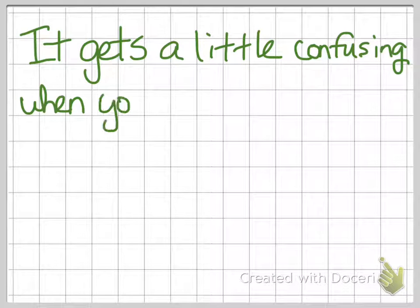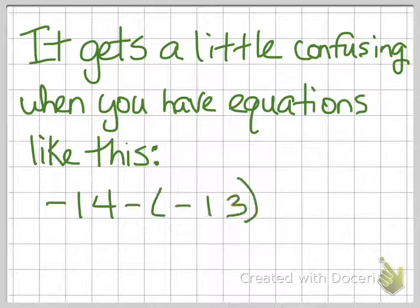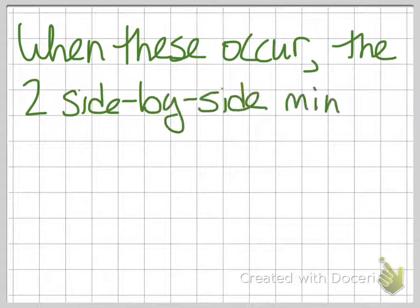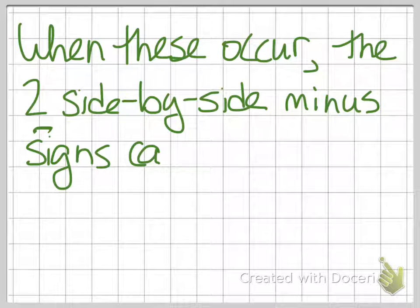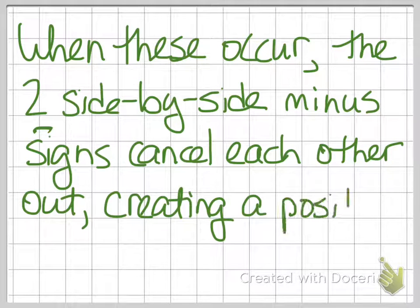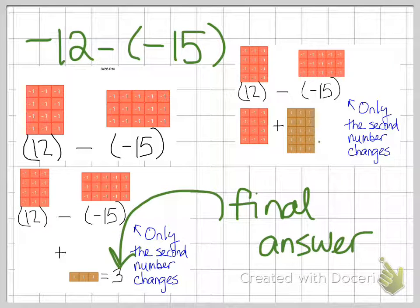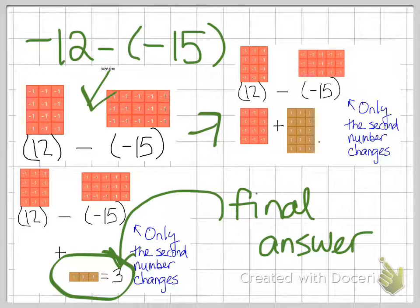It gets a little bit more confusing when you have an equation that looks something like this, when you are subtracting a negative. So in this example, negative 14 minus negative 13 and negative 18 minus negative 18. So let's look at what you're supposed to do when you have these types of situations. When these occur, the two side-by-side minus signs cancel each other out. Think of it like the magnet example I gave in class, creating a positive sign. So, negative 12 minus negative 15, which looks like this, then will change and become negative 12 plus 15. Once that's given, I have 3 left over. That double negative right there is what changed that into the opposite value that you see.